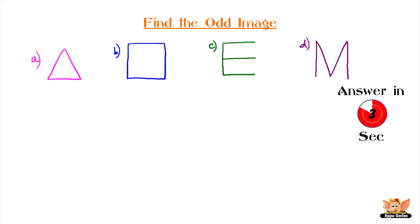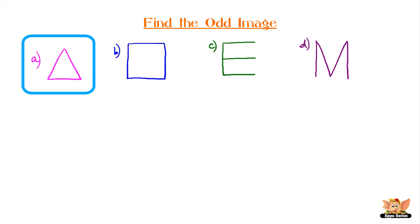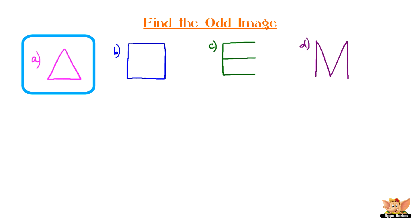I'm sure you would have guessed it by now. The odd one out is A. The triangle has only three line segments, whereas the other figures have four line segments.